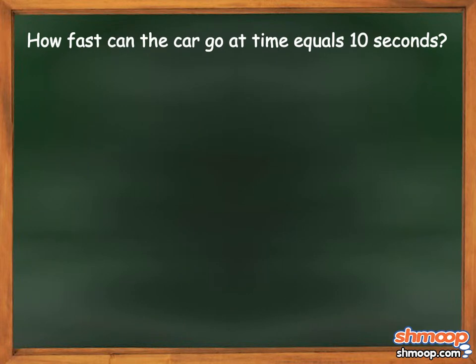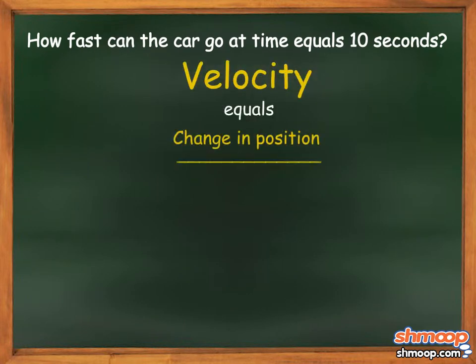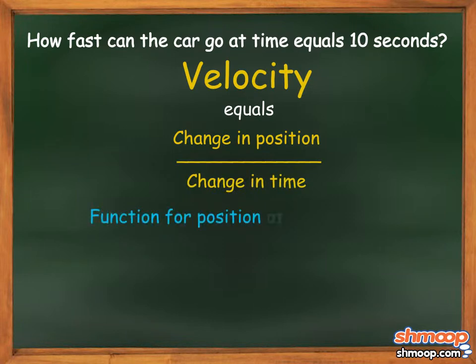One way to express how fast he's going is by using velocity, which equals the change in position over change in time. We know the function for position of the golf cart can be written as f(x) = x².